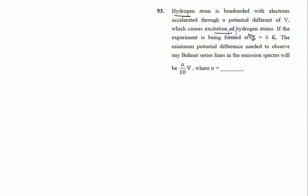Which causes excitation of the hydrogen atom. It is written here: if the experiment is being performed at T equal to 0 Kelvin, the minimum potential difference needed to observe any Balmer series line in the emission spectrum.